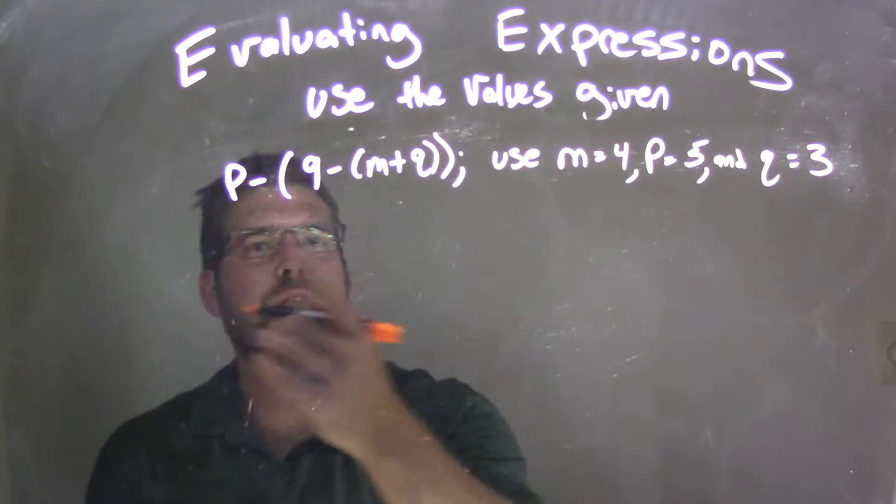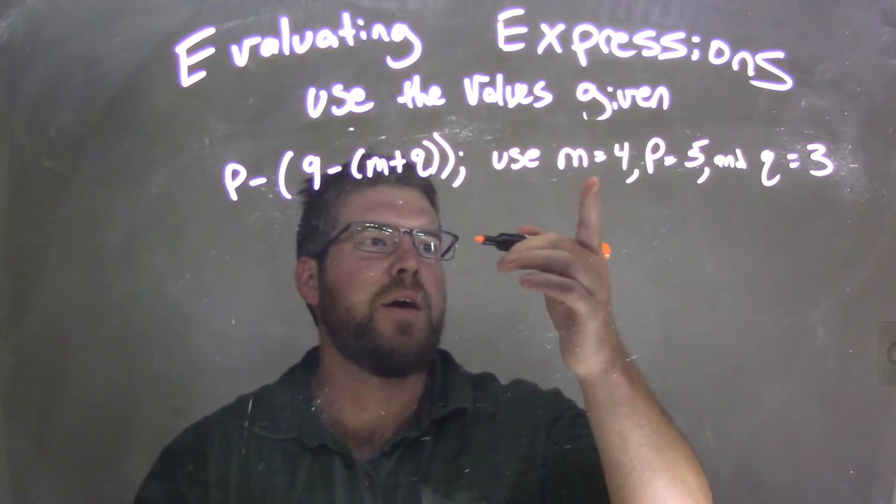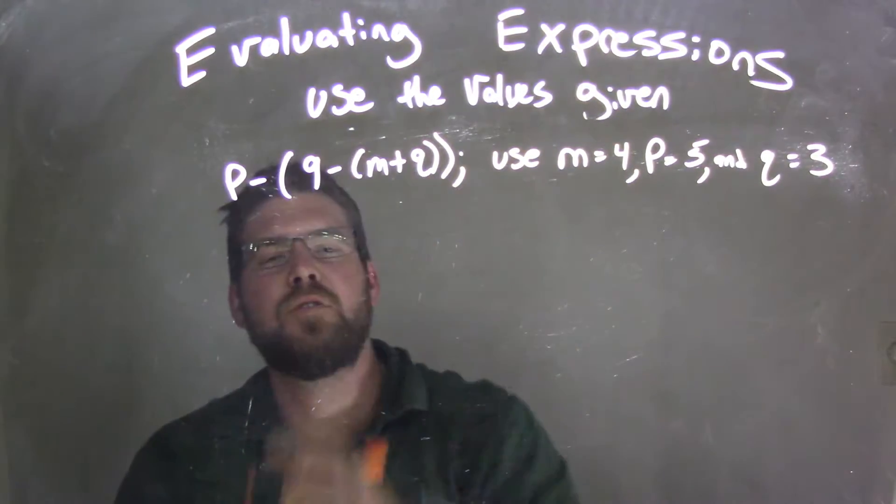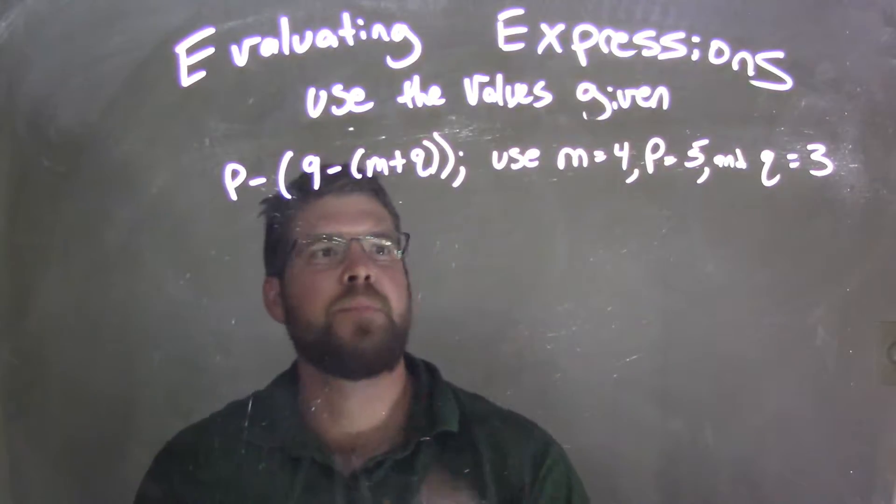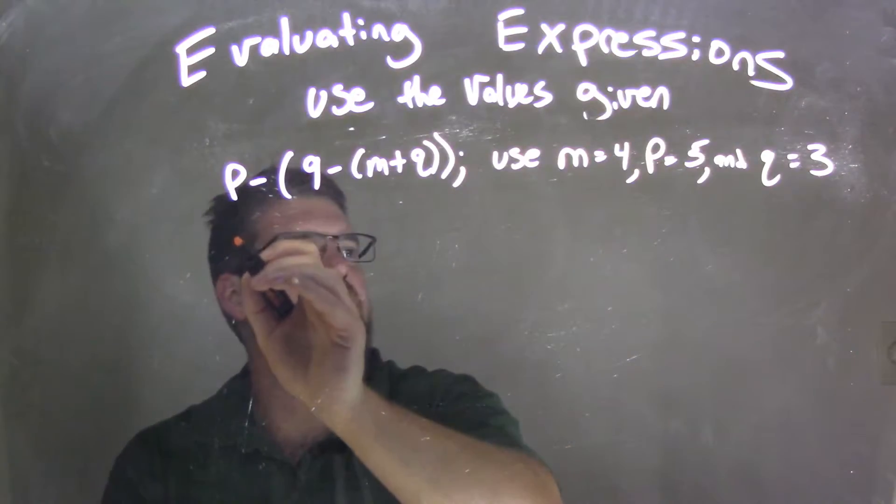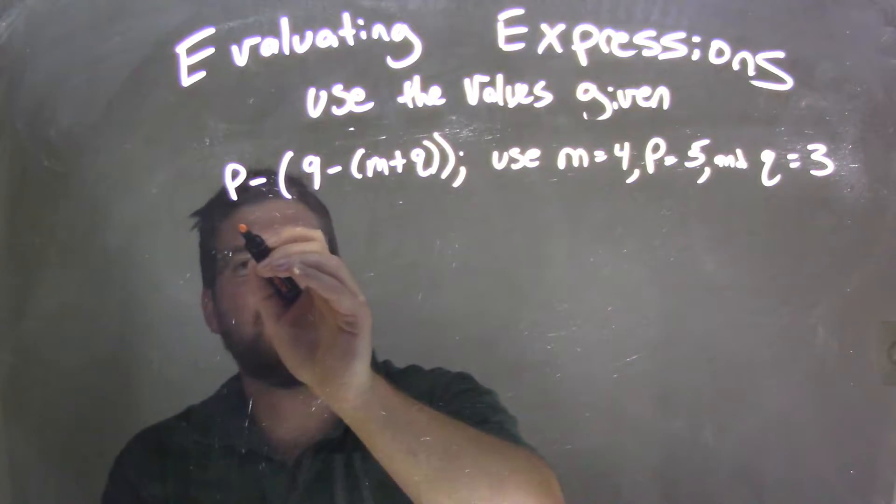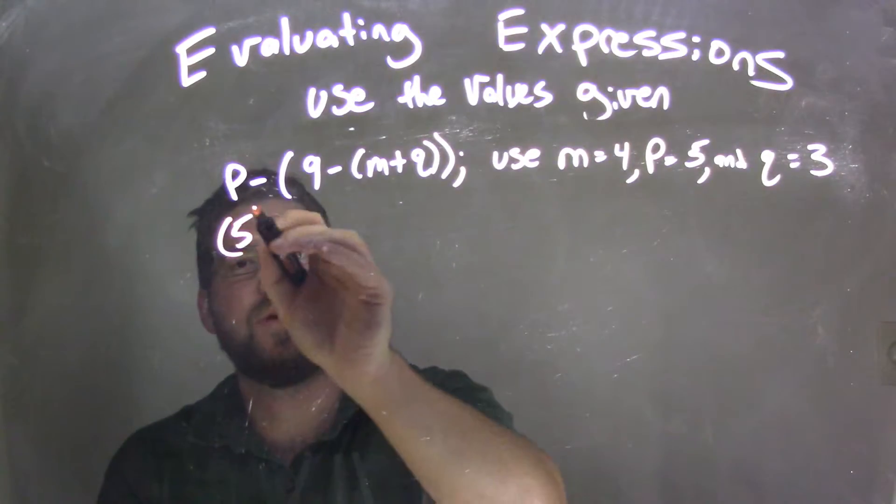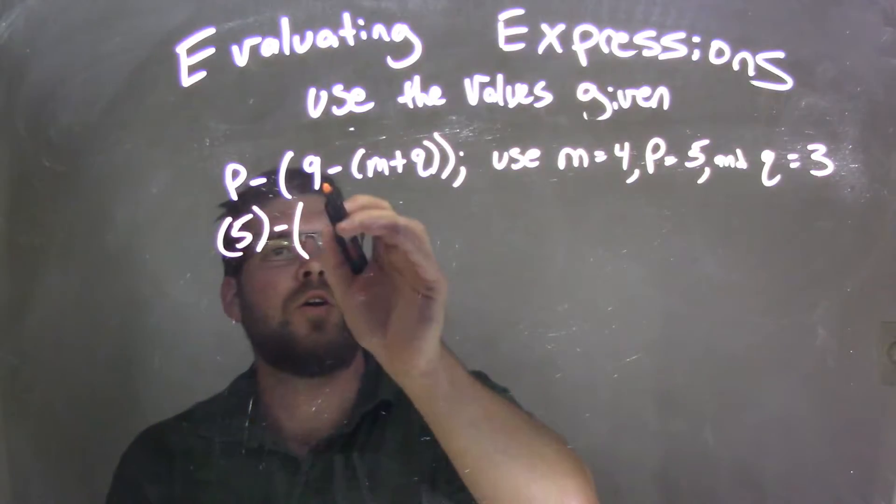So again, we're given this expression. We want to substitute each one of these variables into the corresponding variable there. So m is 4, p is 5, and q is 3. The first letter I see here is p, which is 5. So 5 right here for p, subtracting 9,